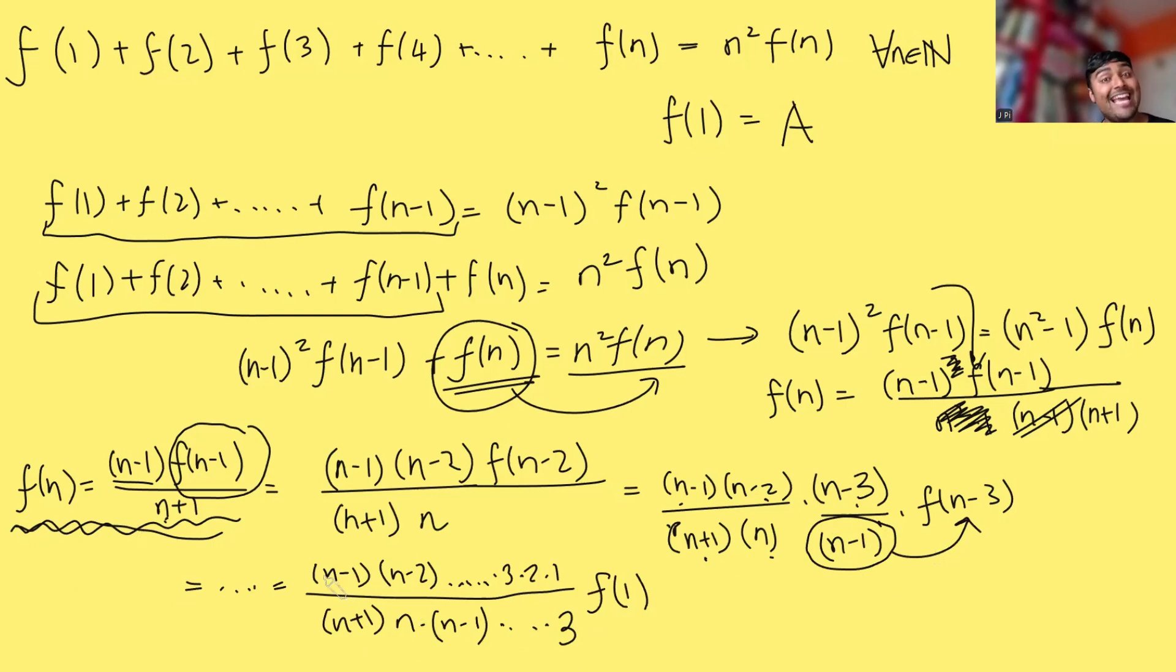so I need to put an f(1) here like so so f(n) is just (n-1) times (n-2) times blah blah blah down to 1 divided by (n+1) times n times (n-1) times blah blah blah down to 3 times f(1) which is just a